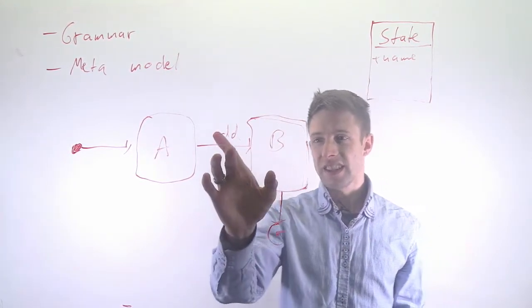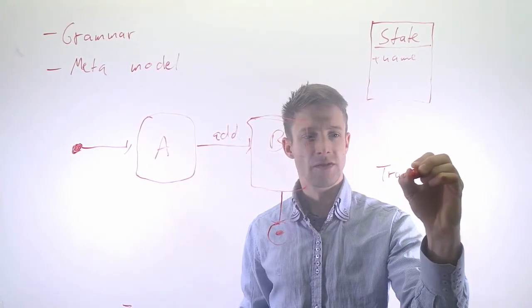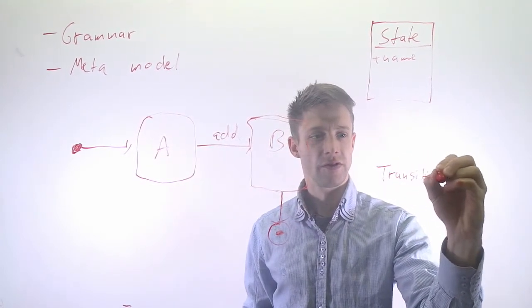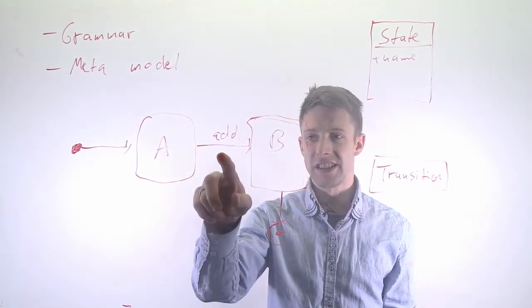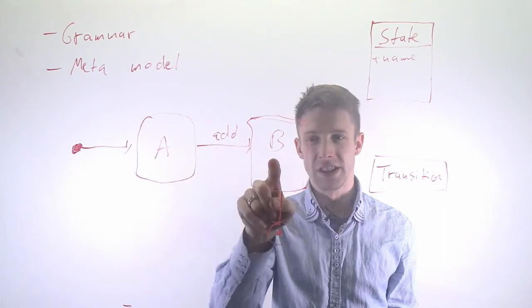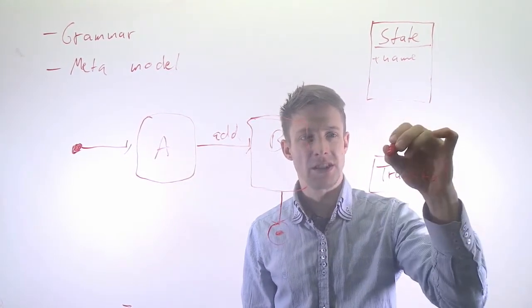You have transitions, and a transition in a state machine is always directed, it goes from an origin to a target, so a transition connects two states.